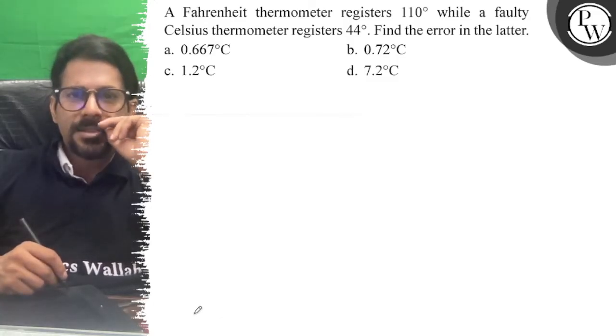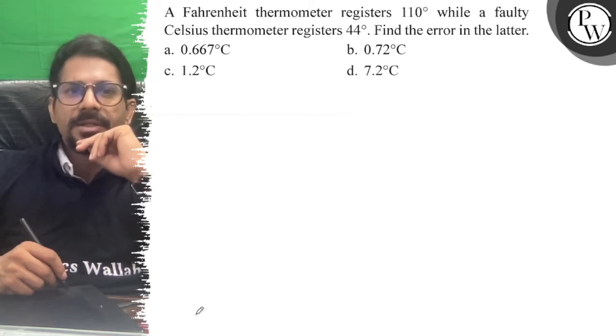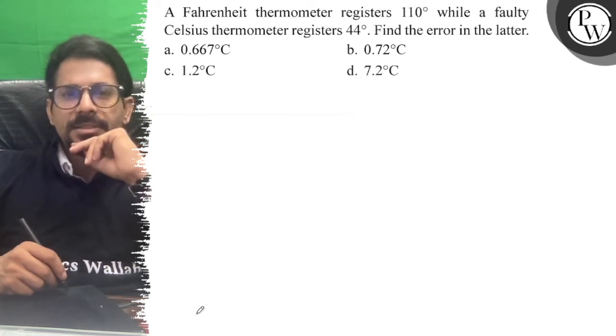Hello everyone, let's see the question. A Fahrenheit thermometer registers 110 degrees while a faulty Celsius thermometer registers 44. Find the error in the latter.